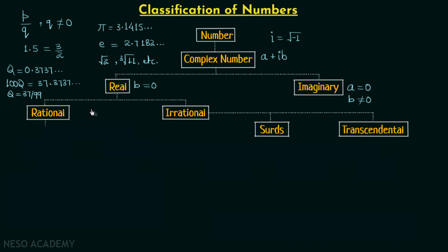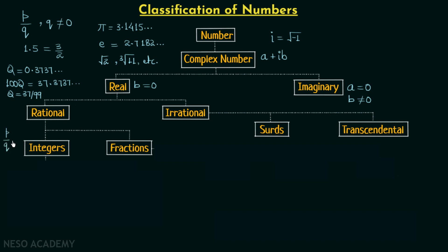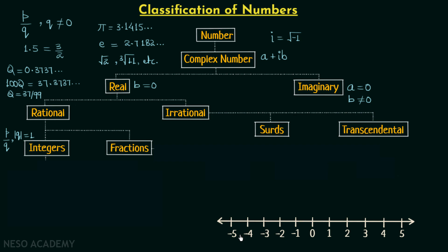Now we will again focus on rational numbers, which can be classified into integers and fractions. Integers are rational numbers where the magnitude of q equals 1, and they can be expressed on a number line: ..., -5, -4, -3, -2, -1, 0, 1, 2, 3, 4, 5, and so on. Integers are classified as negative integers and positive integers, along with 0. Zero is neither negative nor positive. So integers equal negative integers plus 0 plus positive integers.